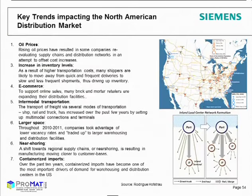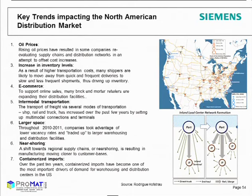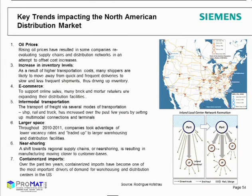Some key trends on distribution markets: rising oil prices have impacts on supply chains and distribution networks. As a result, transportation costs will increase, and shippers are likely to use full truck loading instead of less-than-truck-load concepts, maximizing truck capacity. E-commerce and online sales have led to expansion of distribution facilities for retailers. Retailers use more intermodal modes of transportation — ships, trucks, and rail — and companies tend to enlarge warehousing facilities and shift towards regional supply chains to move closer to customer bases. Container imports have become one of the most important drivers of distribution centers in the US.